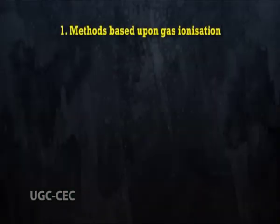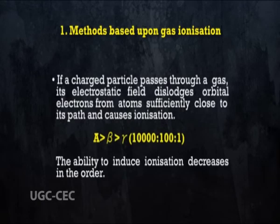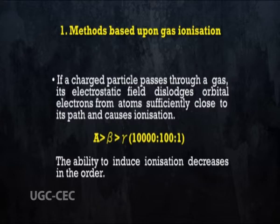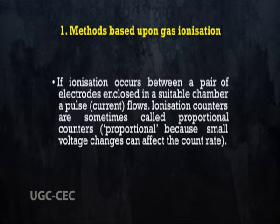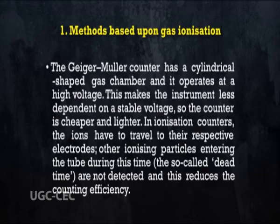The first method is based upon gas ionization. If a charged particle passes through a gas, its electrostatic field dislodges orbital electrons from atoms sufficiently close to its path and causes ionization. The ability to induce ionization decreases in order. If ionization occurs between a pair of electrodes enclosed in a suitable chamber, a pulse current flows. Ionization counters are sometimes called proportional counters — proportional because small voltage changes can affect the count rate. The Geiger-Muller counter has a cylindrical shaped gas chamber and operates at a high voltage, making the instrument less dependent on a stable voltage, so the counter is cheaper and lighter.